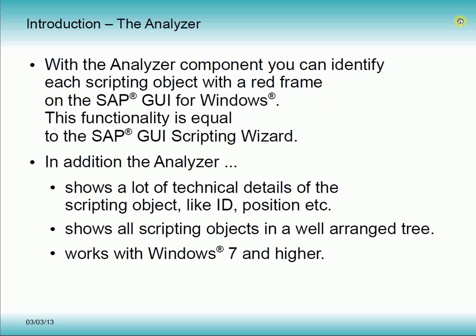With the analyzer component you can identify each scripting object with a red frame on the SAP GUI for Windows. This functionality is equal to the SAP GUI scripting wizard. In addition, the analyzer shows a lot of technical details of the scripting object like ID, position and so on. It shows all scripting objects in a well-arranged tree and it works with Windows 7 and higher.